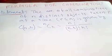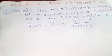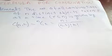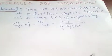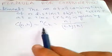Thanks for watching my video. Today I'm going to discuss the formula for combination. The statement is that the number of combinations of n distinct objects taken r at a time, such that r is less than or equal to n, is given by